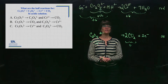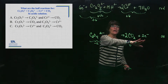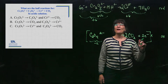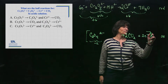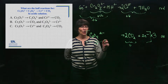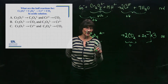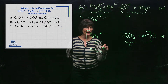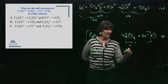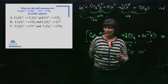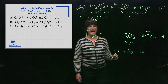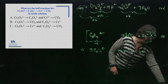The electrons gained and lost must be the same number — you can't gain six and only lose two. I need to multiply the second half-reaction by three so that we have six electrons lost to match six electrons gained. To avoid mistakes, I rewrite the reaction with the coefficient of three all the way through: three C₂O₄²⁻ going to six CO₂, plus six electrons.